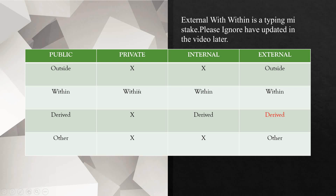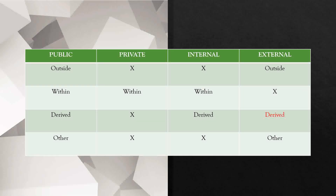For private, it cannot be called from outside. It can only be called from within. It cannot be called from the derived class and it also cannot be called from other contracts. Same for internal, but it has an extension over private — internal can also be called from derived contracts. For outside and others, it cannot be called. For external, it can only be called from outside the contract. It cannot be called from within. It can be inherited in a derived class but it cannot be used there, and it can also be used from other contracts.